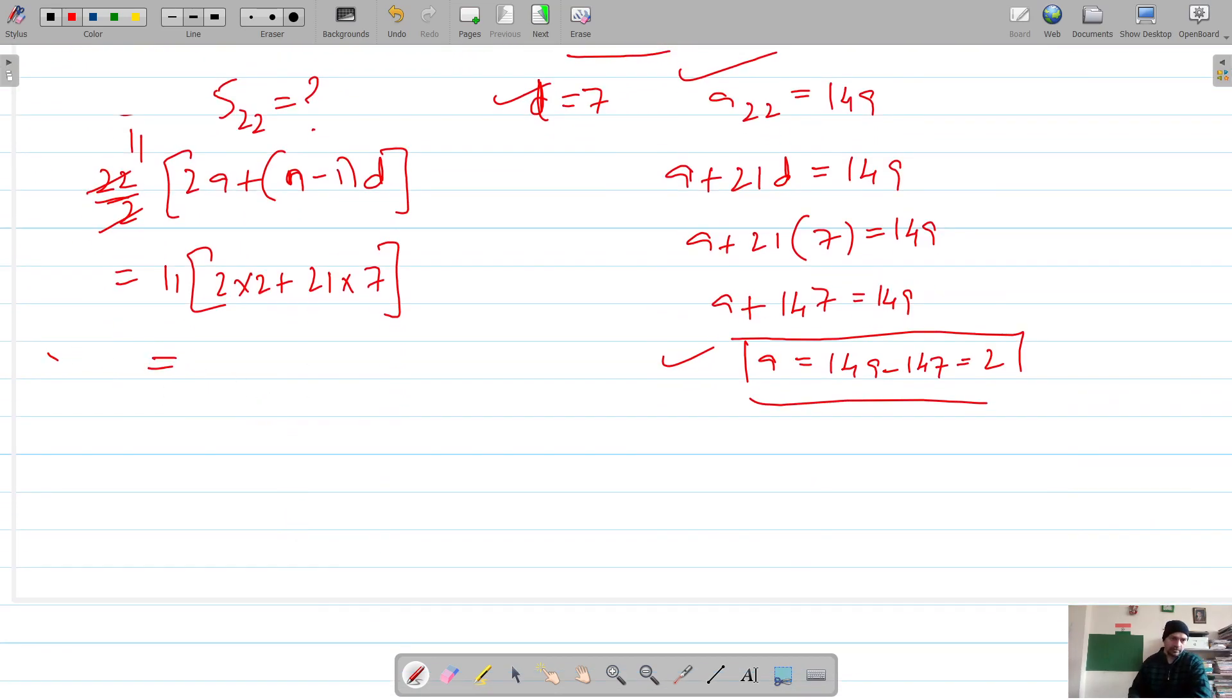So the sum of 22 terms is 11 into (4 plus 147), which is 11 into 151, and 151 into 11 is 1661. So sum of 22 terms is 1661.